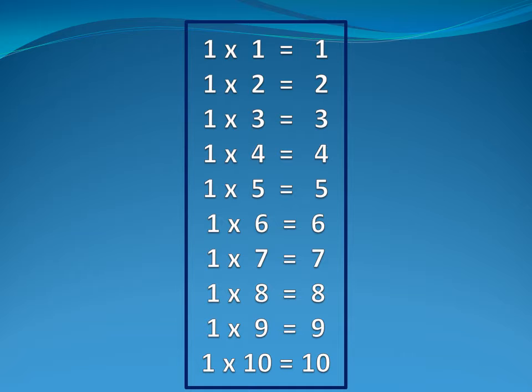First we will start with one table. One one is one. One two is two. One three is three. One four is four. One five is five.